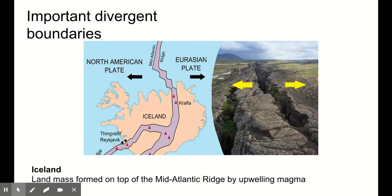Here's another divergent plate boundary associated with the mid-Atlantic ridge — this is Iceland. Iceland is a landmass that formed on top of the mid-Atlantic ridge because magma upwelling from the ridge collected in such large volumes that it built up into a landmass. It also means that Iceland is being pulled apart. The North American plate is moving one way, the Eurasian plate is moving the other, and in that rift we see a ton of volcanic activity and some pretty visible plate movement.